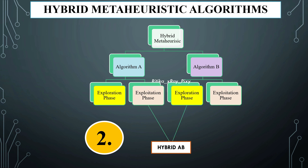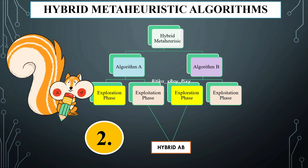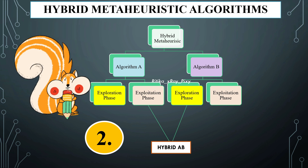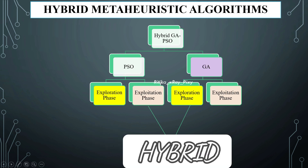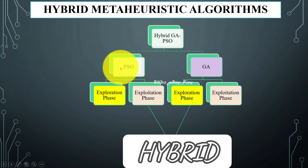Exploration and exploitation are two key phases used to balance the search process. In a hybrid algorithm, the exploration and exploitation phases of each algorithm can be combined in different ways depending on the problem being solved and the algorithm's strengths. Now we will understand how to hybridize genetic algorithm with particle swarm optimization algorithm.